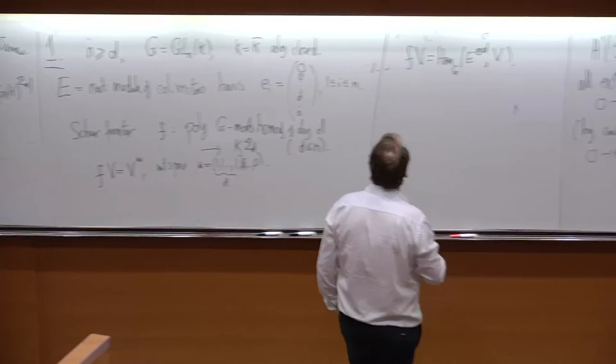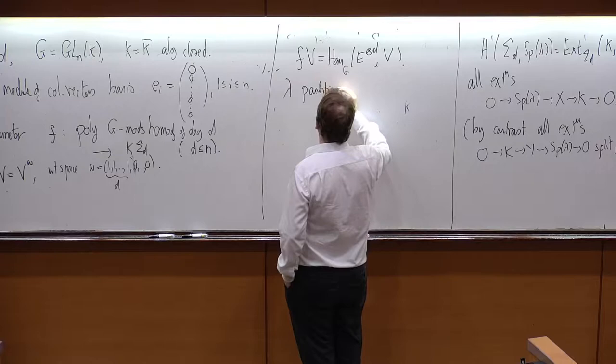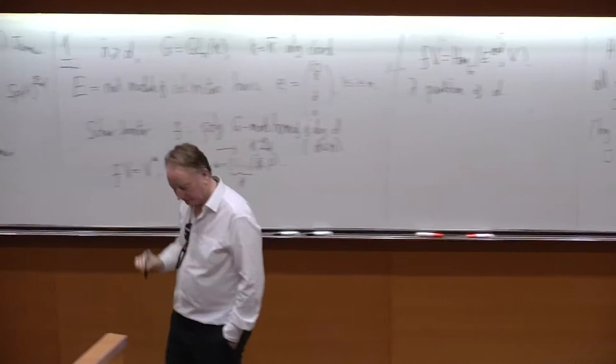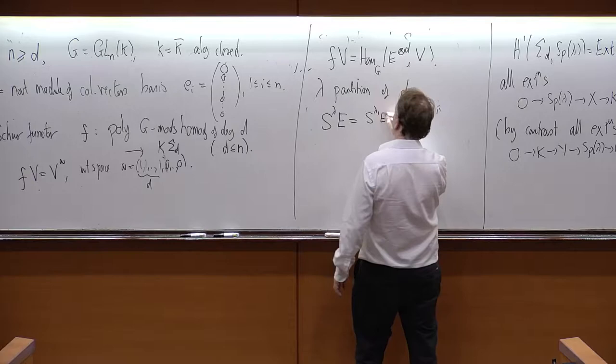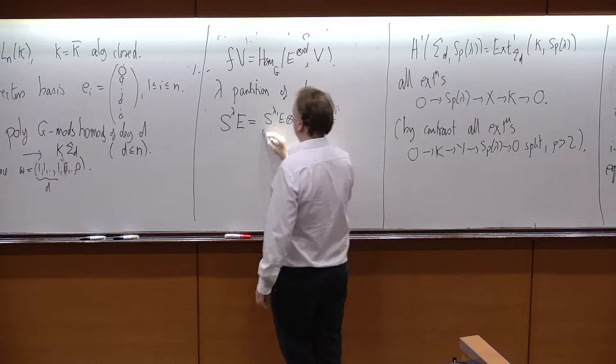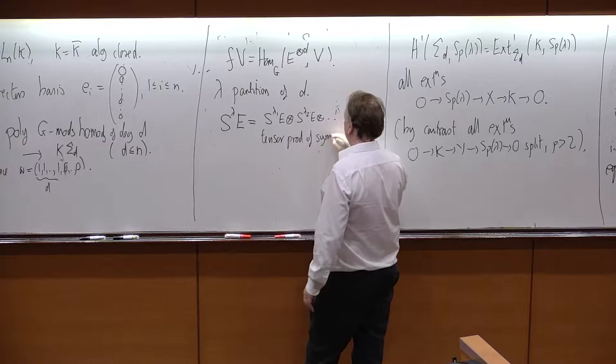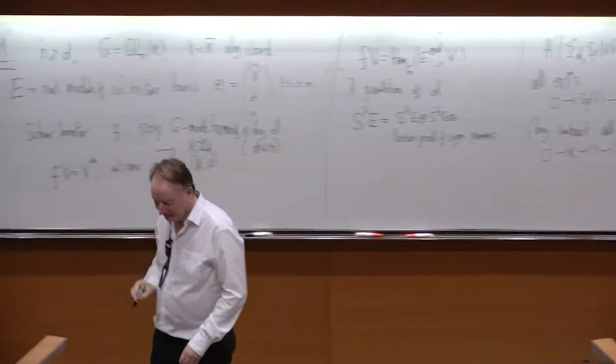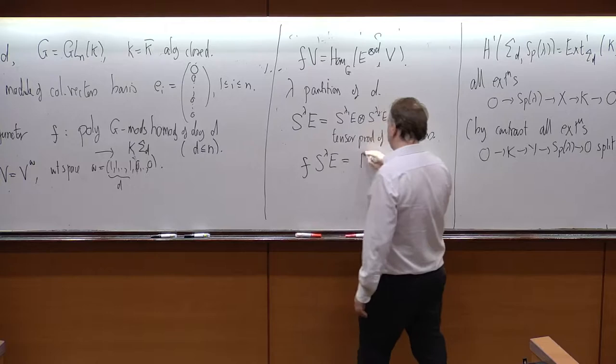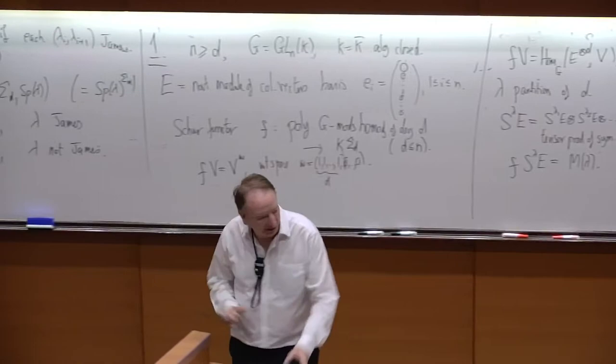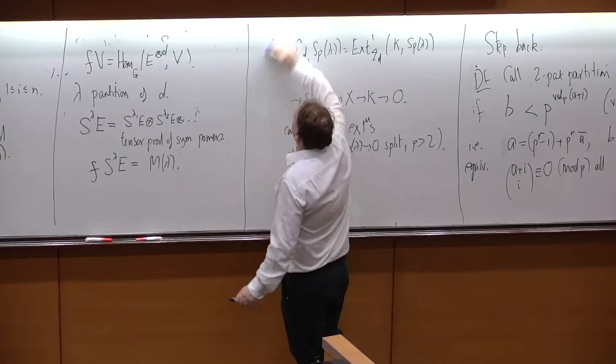So, if we have a partition λ of D, I'm going to use this notation S^λ E for the tensor product of the symmetric powers. And the first thing you can say is if you apply the Schur functor to this, you recover our old friend the permutation module. And the philosophy, as explained in Green's book, is that you should take something nice in the general linear group, apply the Schur functor, and you should get something nice in the symmetric group.